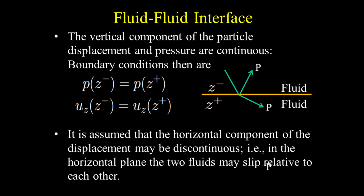Boundary conditions at the fluid-fluid interface. At this interface, the incident energy is partitioned into one reflection — a reflected P wave, because fluid does not support S waves — and one transmission, or transmitted P wave. So we need two boundary conditions to solve this energy partition problem. The vertical component of particle displacement and pressure are continuous. It is assumed that the horizontal component of displacement may be discontinuous — that is, in the horizontal plane, the two fluids may slip relative to each other.